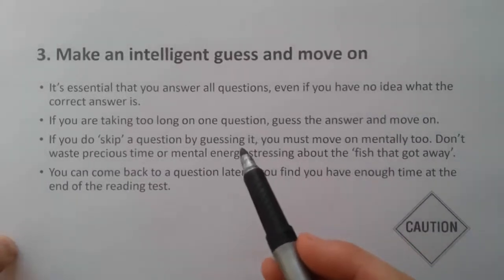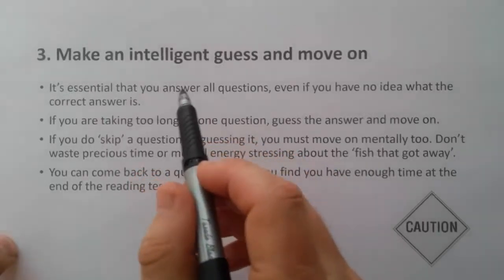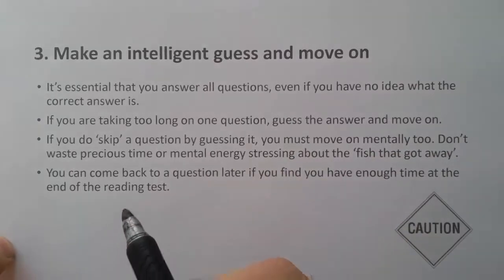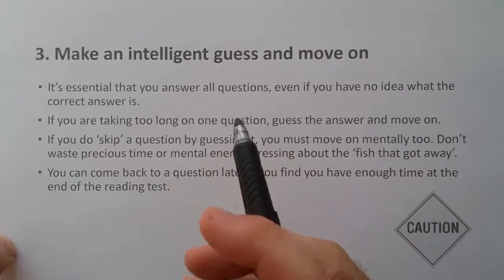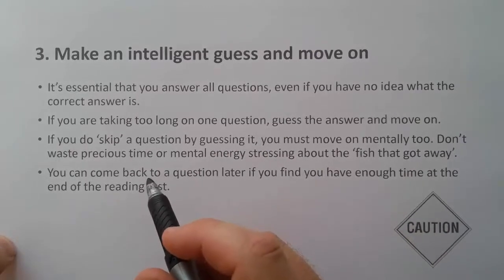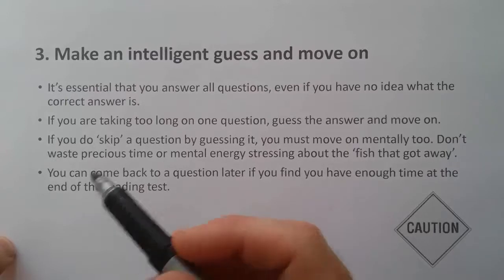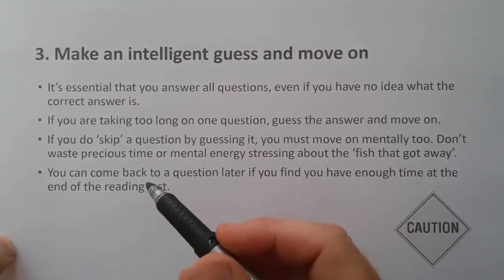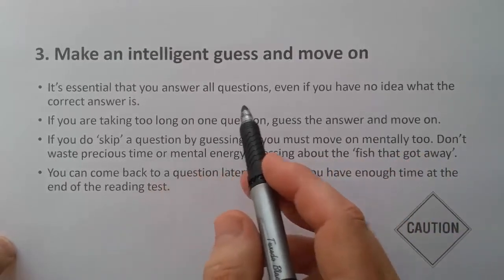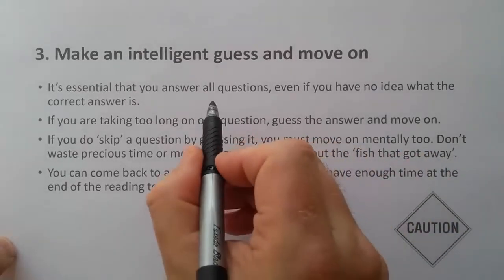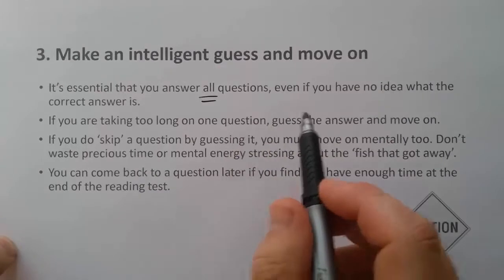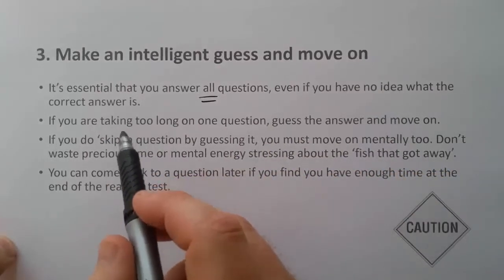Turning to the third strategy: making an intelligent guess and moving on. Reading comprehensions are quite tricky — there are distractors, difficult words, synonyms, parallel phrases, and lots of information to cover. We can sometimes get overwhelmed or a little panicky. So at some point we just need to make a guess and move on. It's essential that you answer all questions — you don't get penalized for making a mistake, so give every question a go. Even if you have no idea, just try.